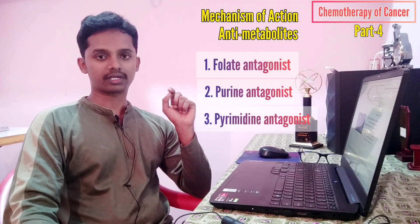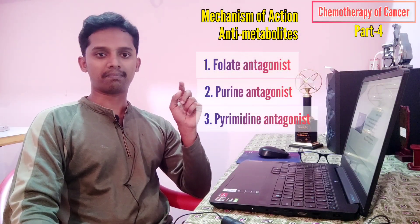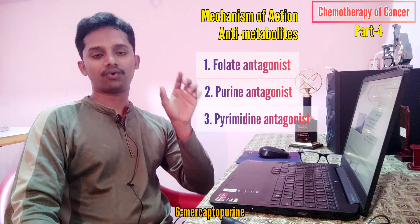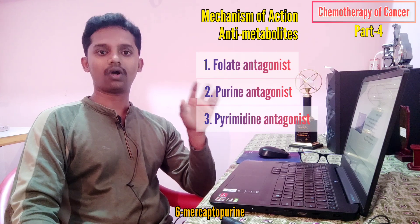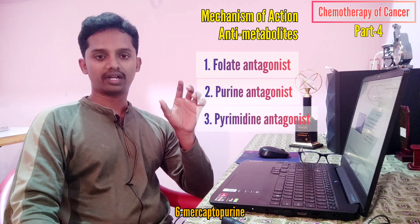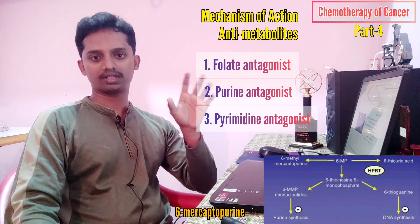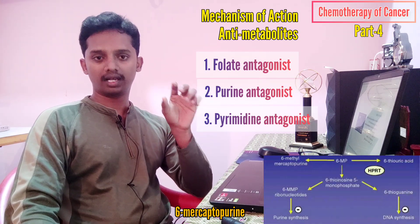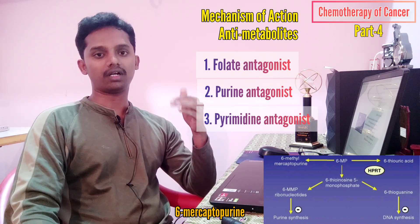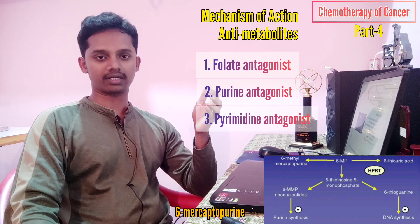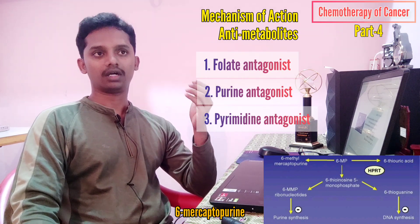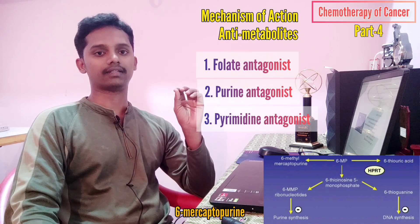The second category is purine antagonists. An example is 6-mercaptopurine, or 6MP. This mechanism is similar to folate — just as folate is used for DNA synthesis, purines are also used for DNA synthesis. This drug blocks purine synthesis, so DNA synthesis is also blocked, cell replication stops, and the cell growth is blocked, leading to cell death.